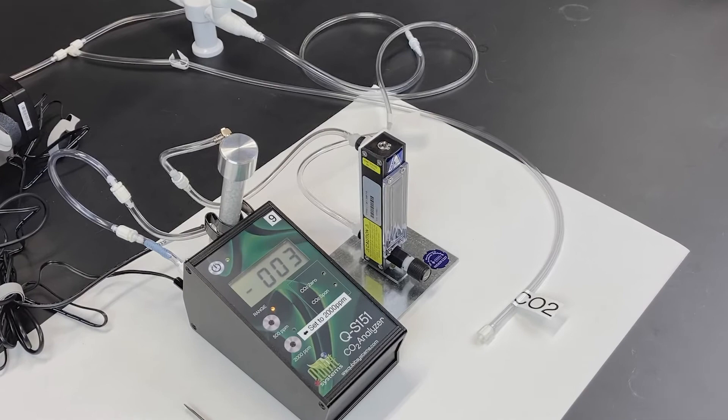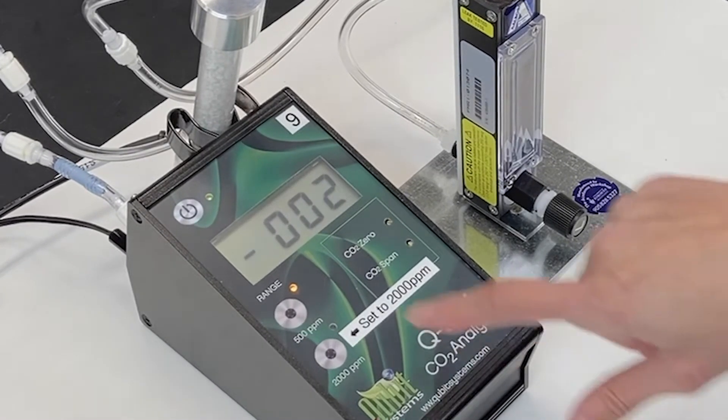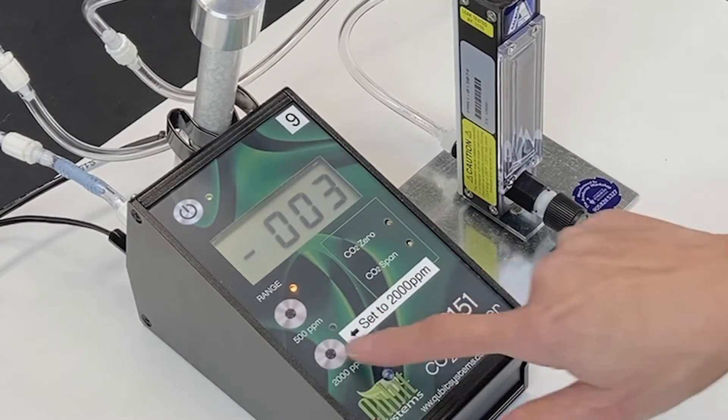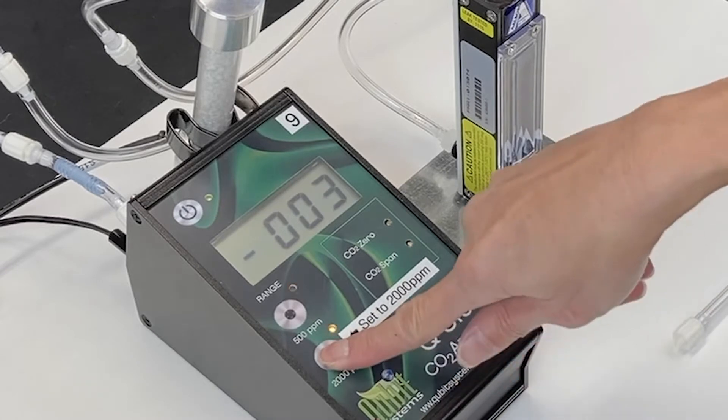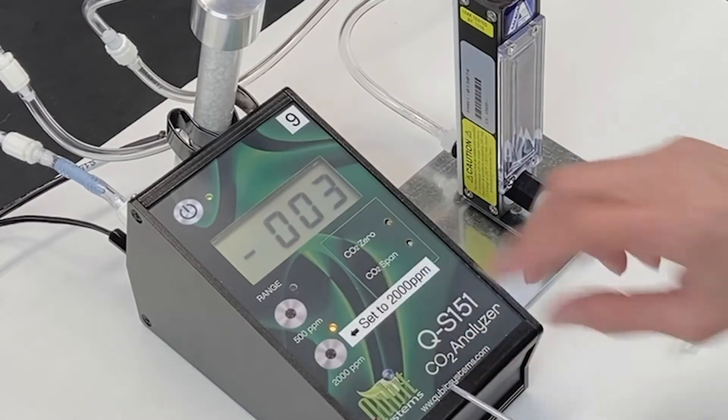While you're waiting for the carbon dioxide levels to stabilize, it's a good time to check and make sure the gas analyzer is set to the 2,000 parts per million range. Once the reading has stabilized, use a small screwdriver to set the reading to zero.